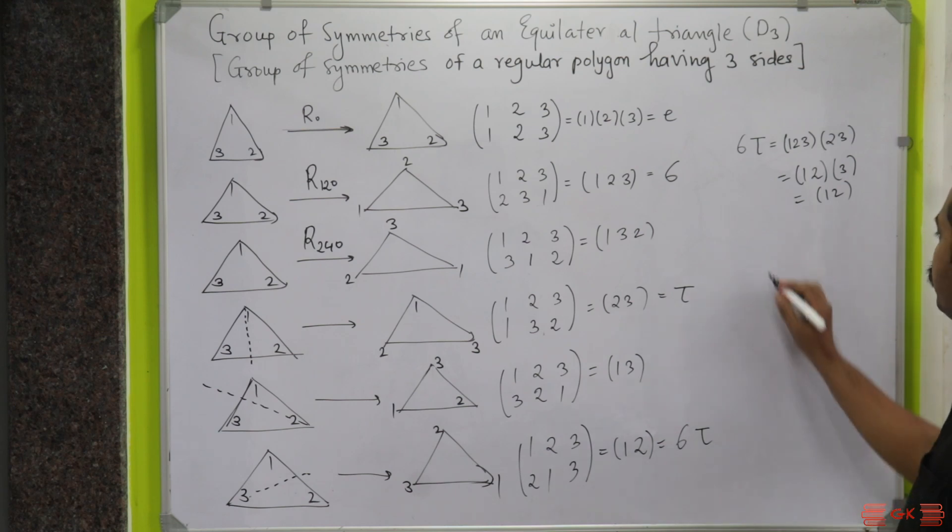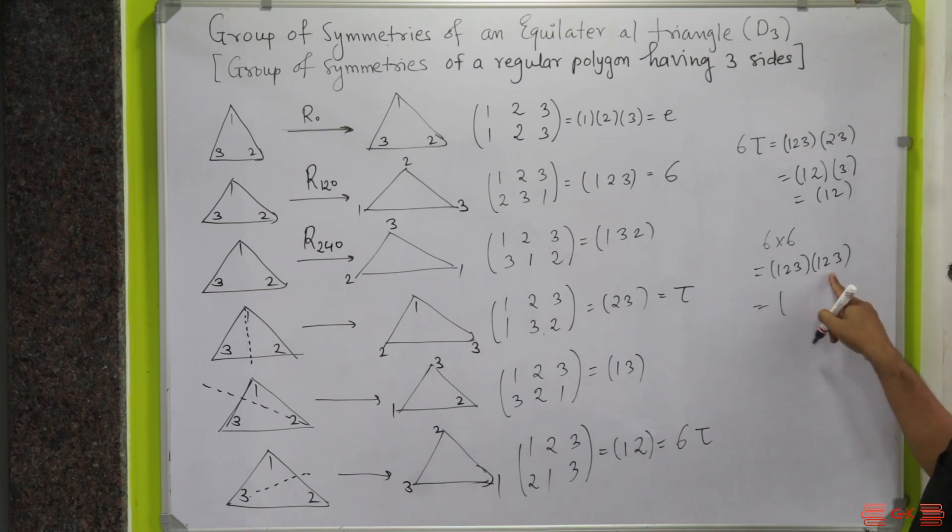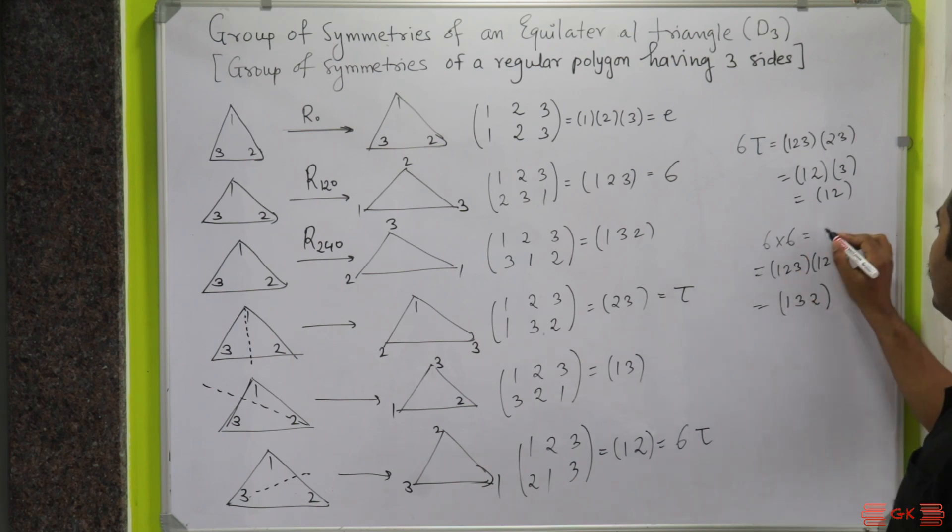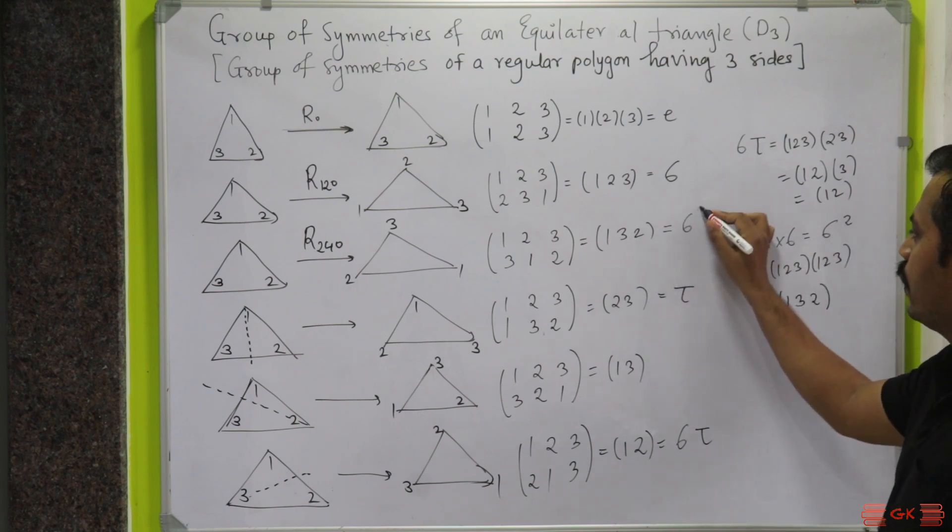Let us see what sigma squared is. Sigma multiplied by sigma—that is (1,2,3) multiplied by (1,2,3)—is actually equal to: 1 maps to 2, 2 maps to 3. So 1 will map to 3, 3 maps to 1, 1 maps to 2. So this is (1,3,2). And sigma multiplied by sigma—remember, in group theory, it is sigma squared. So this is my sigma squared.